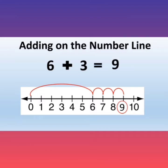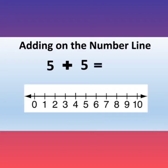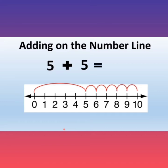Let's do one more question. The question is 5 plus 5 is equal to how much? Let's look at the number line. The first number given to us is number 5. So we will take a pencil to number 0 and take a big jump from 0 to 5. Then we take 5 small jumps to the right: 1, 2, 3, 4, 5. So we have reached number 10. So we will circle number 10. So the answer of 5 plus 5 is equal to 10.